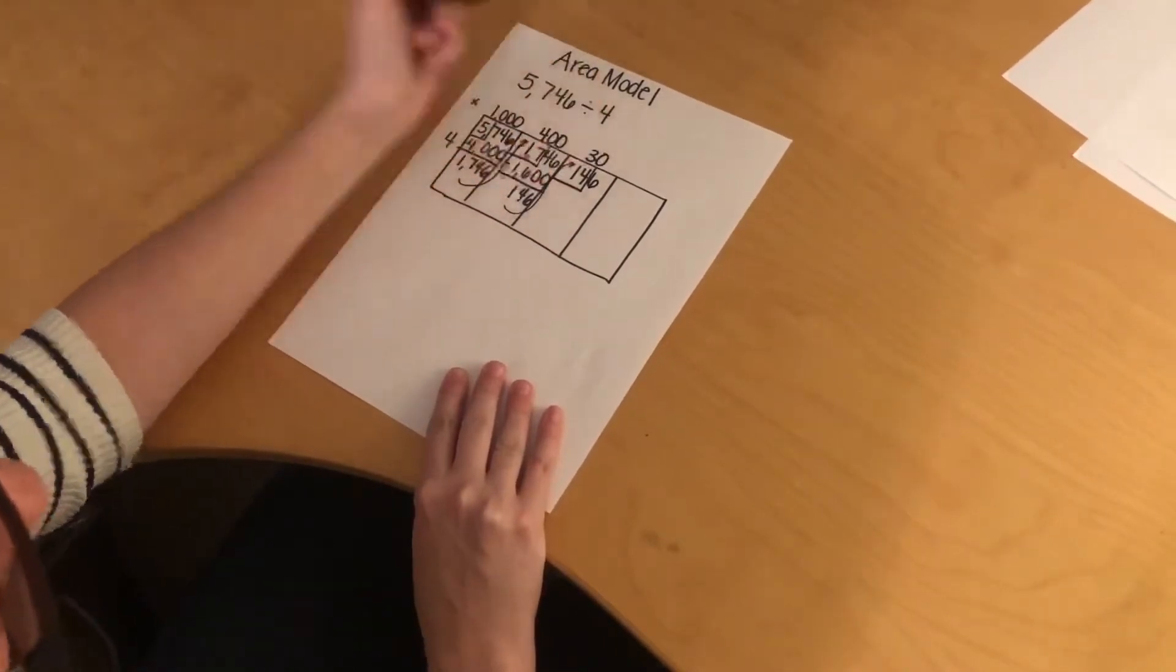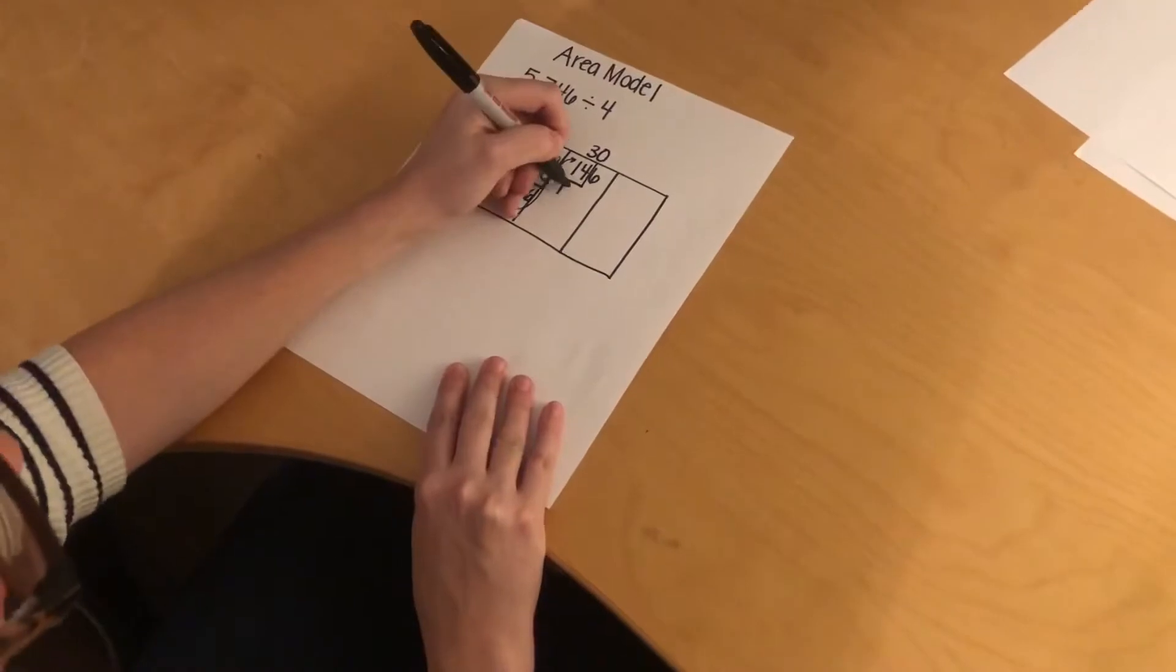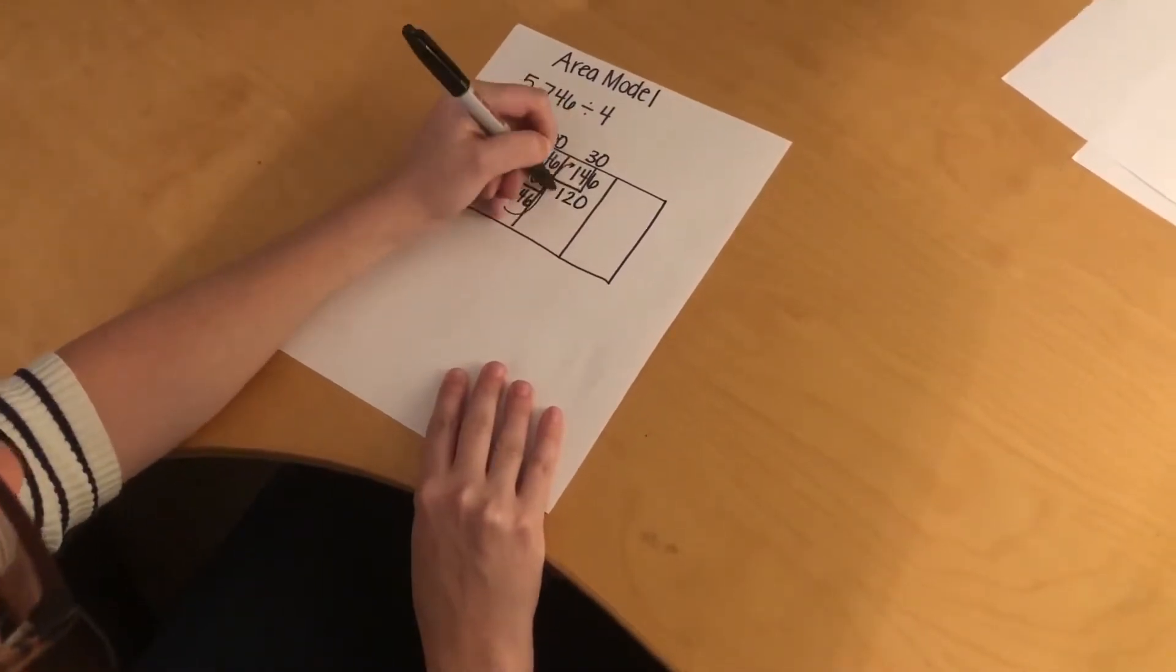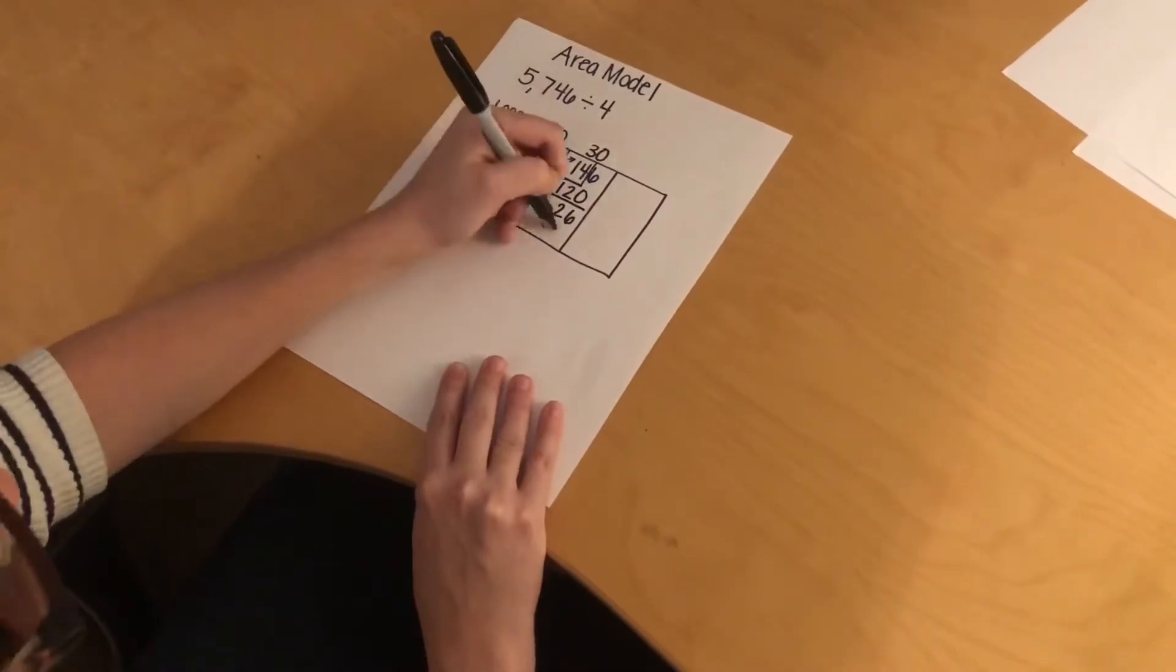Then I multiply 30 times 4, which is 120, and then I subtract, and I get 26. I bring that over.